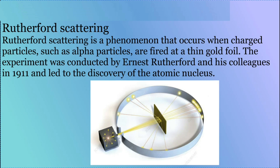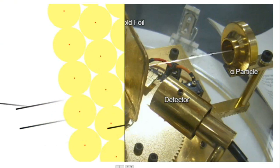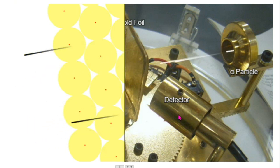The results of the Rutherford experiment, also known as the gold foil experiment, were groundbreaking and led to a new understanding of atomic structure. Here are some of the key findings.